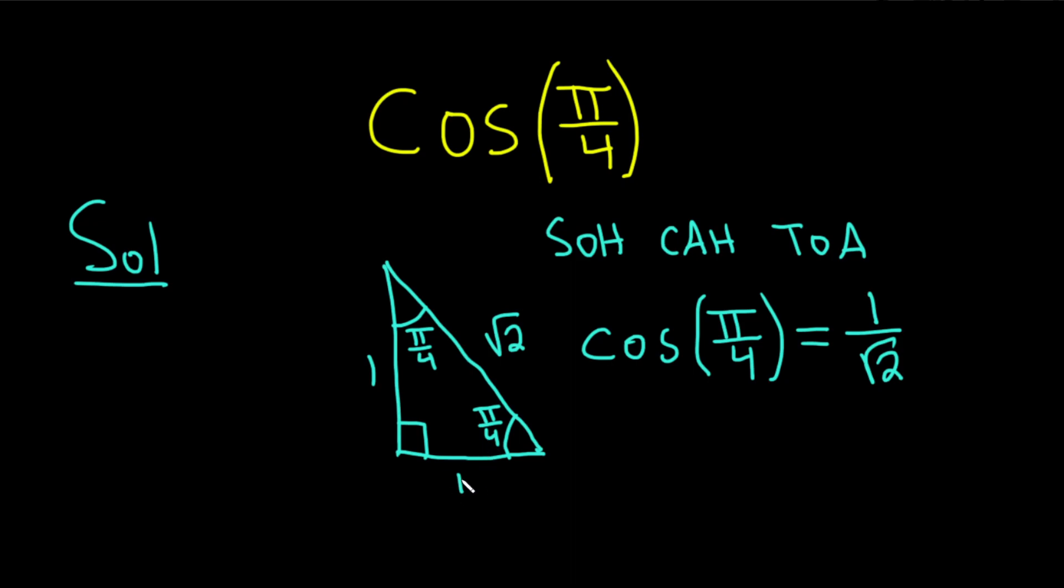So it's adjacent over hypotenuse, 1 over the square root of 2. A better way to write it would be to clean up the answer by rationalizing. You can multiply by 1 in a clever way. So we multiply by the square root of 2 over the square root of 2.